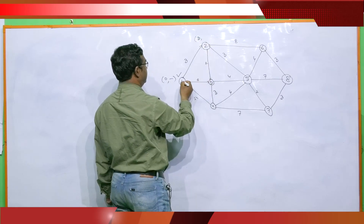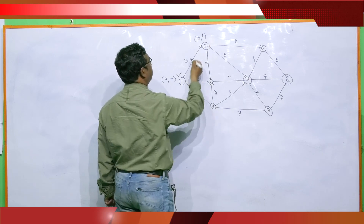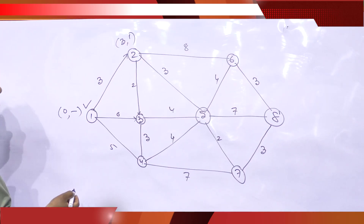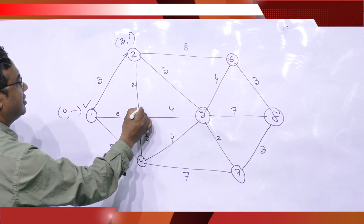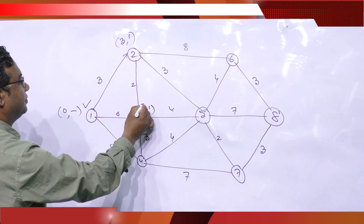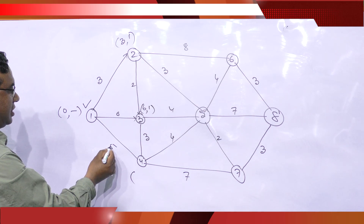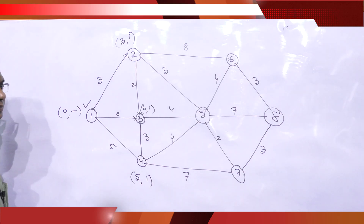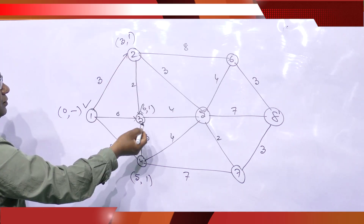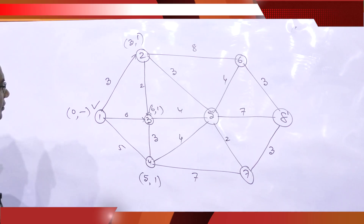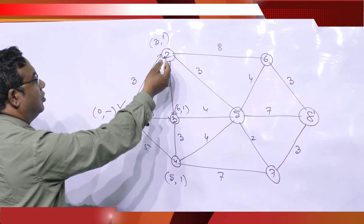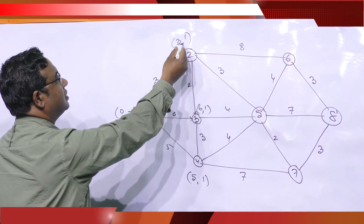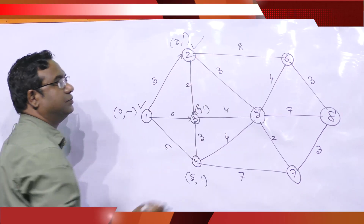Node 2: distance is 3, preceding node is 1 — so label is (3, 1). Node 3: distance is 6, preceding node is 1 — label (6, 1). Node 4: distance is 5, preceding node is 1 — label (5, 1). So the working levels of node 2, node 3, and node 4 are set. Now select the node with the smallest Ui: values are 3, 5, 6 — so 3 is smallest. Let us take node 2.